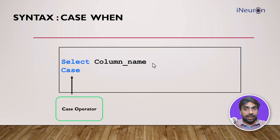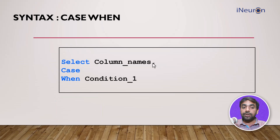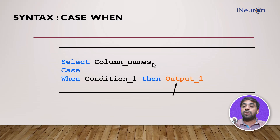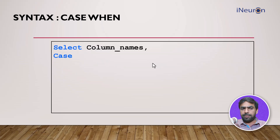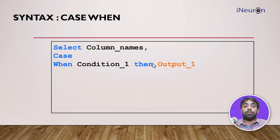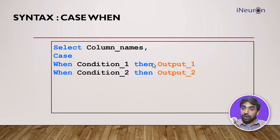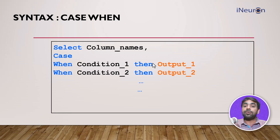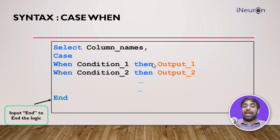Once you write CASE, you put in the first condition: WHEN condition one THEN output one. Similarly, you can add multiple conditions — WHEN condition two THEN output two — and so on for as many conditions as needed. After defining all conditions, you close the block with END. So from CASE to END is the logic that defines the new column.